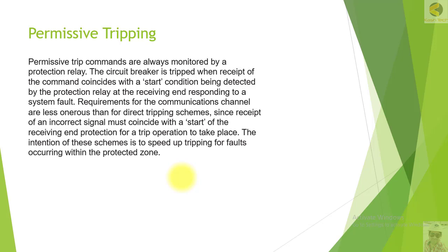Permissive tripping is a kind of tripping that requires that at the local end it should receive a permissive signal from the remote end, and also it should pick up in zone. So the relay should be picked up at the local end and it should have a permissive signal from the remote end in order to operate.